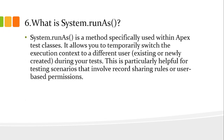What is System.runAs()? System.runAs() is a method specifically used within Apex test classes. It allows you to temporarily switch the execution context to a different user during your test. This is particularly helpful for testing scenarios that involve record sharing rules or user permission-based access control.